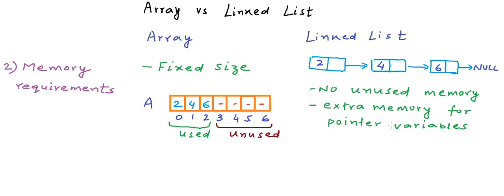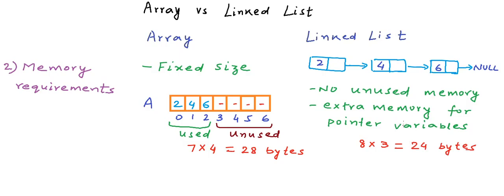In a typical architecture, an integer takes 4 bytes and a pointer variable also takes 4 bytes. The memory for an array of seven integers is 28 bytes. For a linked list of three integers, each node is 8 bytes (4 for integer, 4 for pointer), totaling 24 bytes. If we add one more element, the array uses one more position while the linked list creates a new node taking another 8 bytes, for a total of 32 bytes.